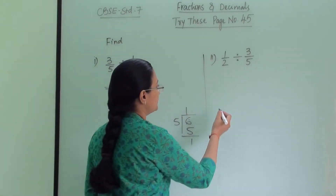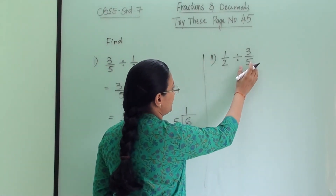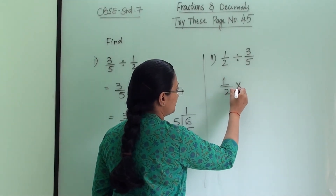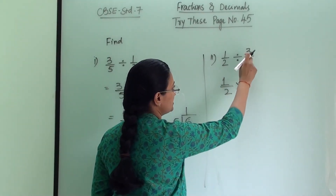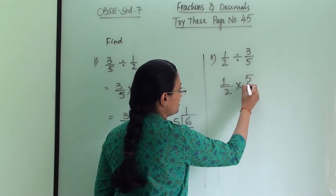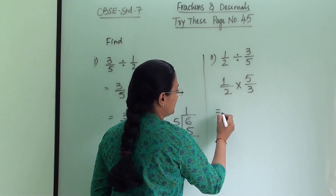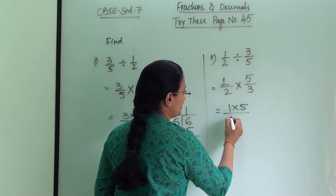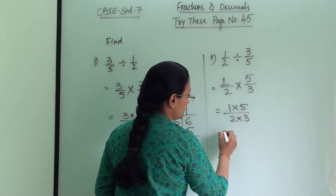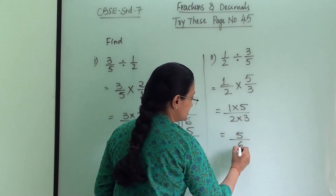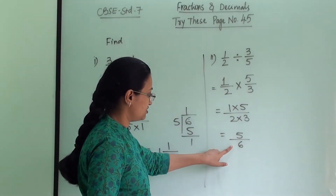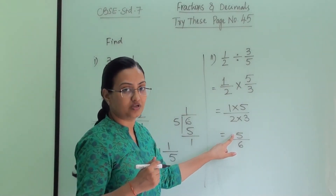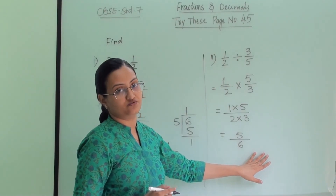Second numerical: 1/2 divided by 3/5. We change division to multiplication and take the reciprocal of 3/5 which is 5/3. So it becomes 1 × 5 divided by 2 × 3 = 5/6. This is a proper fraction — the numerator 5 is smaller than the denominator 6 — so we do not need to convert it to a mixed fraction. The answer is 5/6.